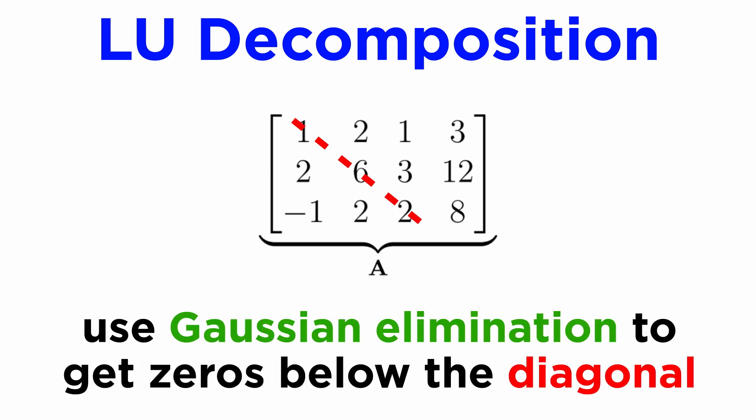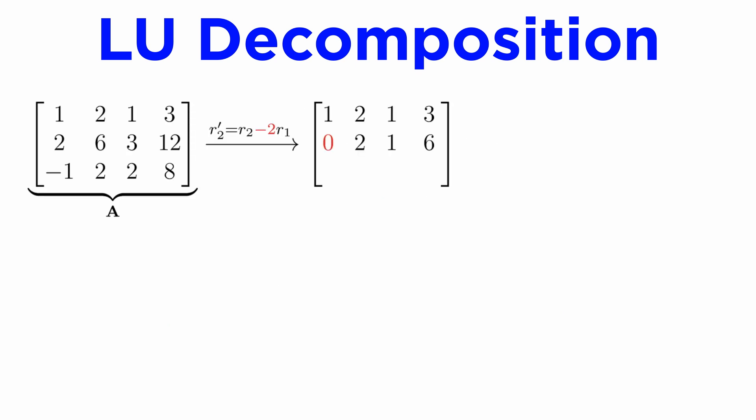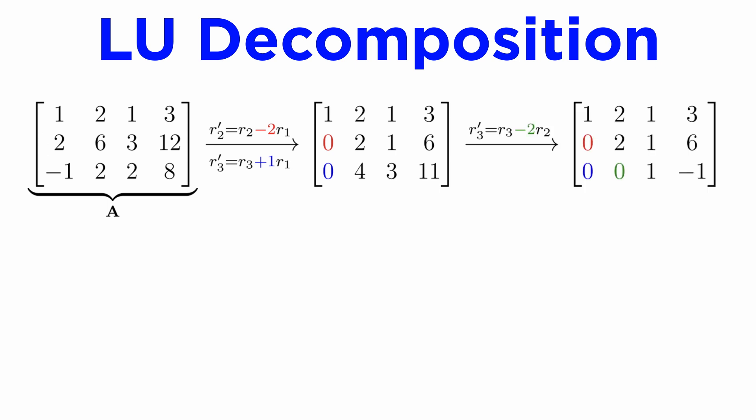The first step is to use Gaussian elimination to get all zeros below the diagonal of this matrix, which we do using row operations. Here we can subtract twice row one from row two, then add row one to row three, and this will generate zeros in the first column below the diagonal. We can then subtract twice row two from row three to get another zero in the second column below the diagonal, and this will be our upper triangular matrix U.